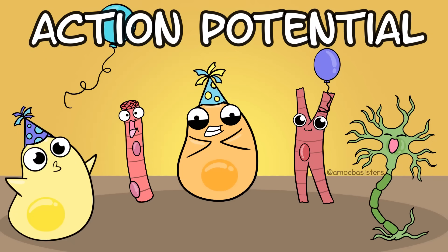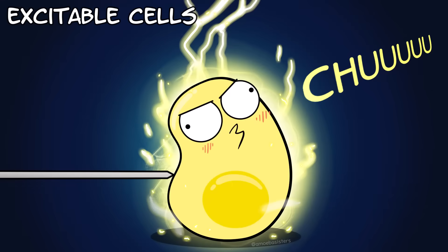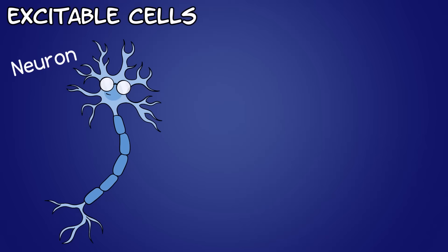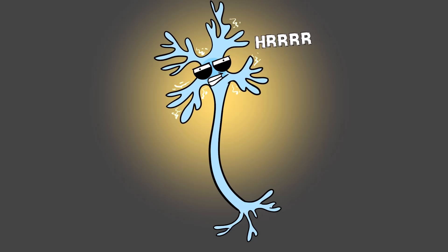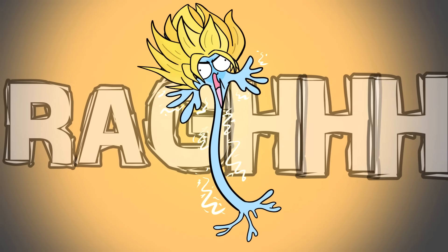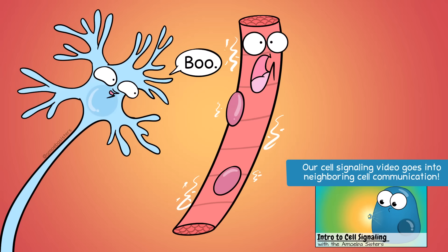Action potentials are something you find in what are called excitable cells. An excitable cell is a cell that, from a stimulus, can generate an electrical signal. Excitable cells include neurons and skeletal muscle cells, which would both be directly involved in the reaction time with the ruler. The action potential is an electrical signal that excitable cells can generate, and it can also be sent to a neighboring cell.